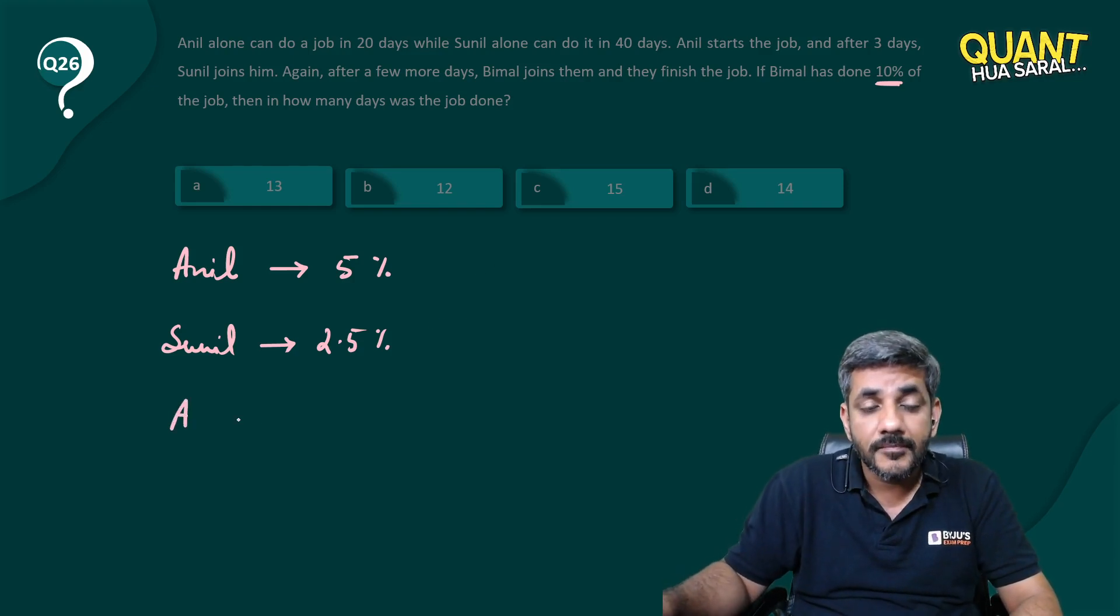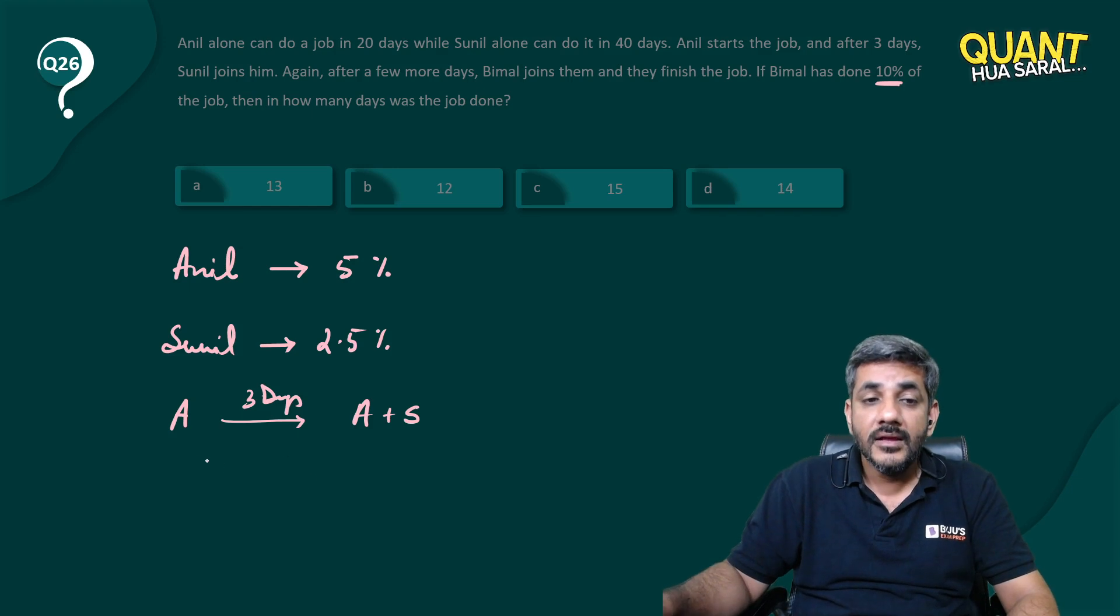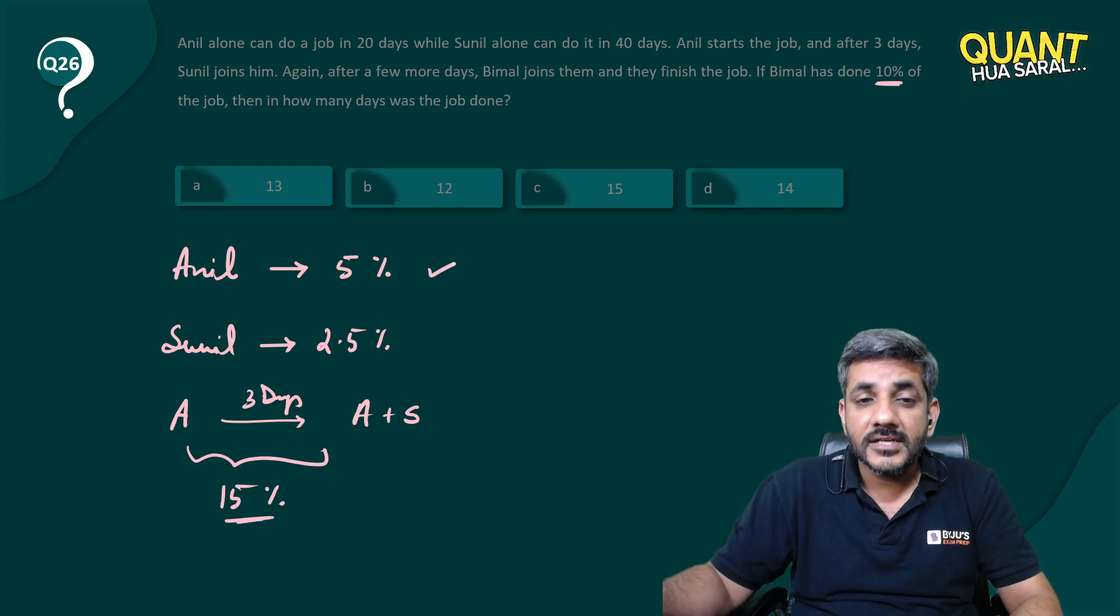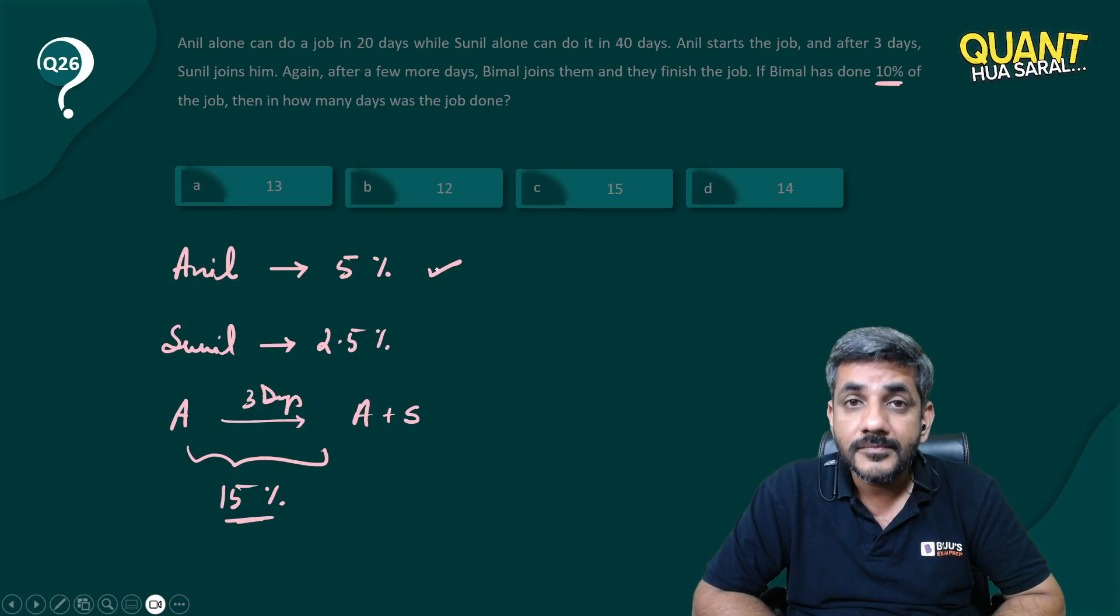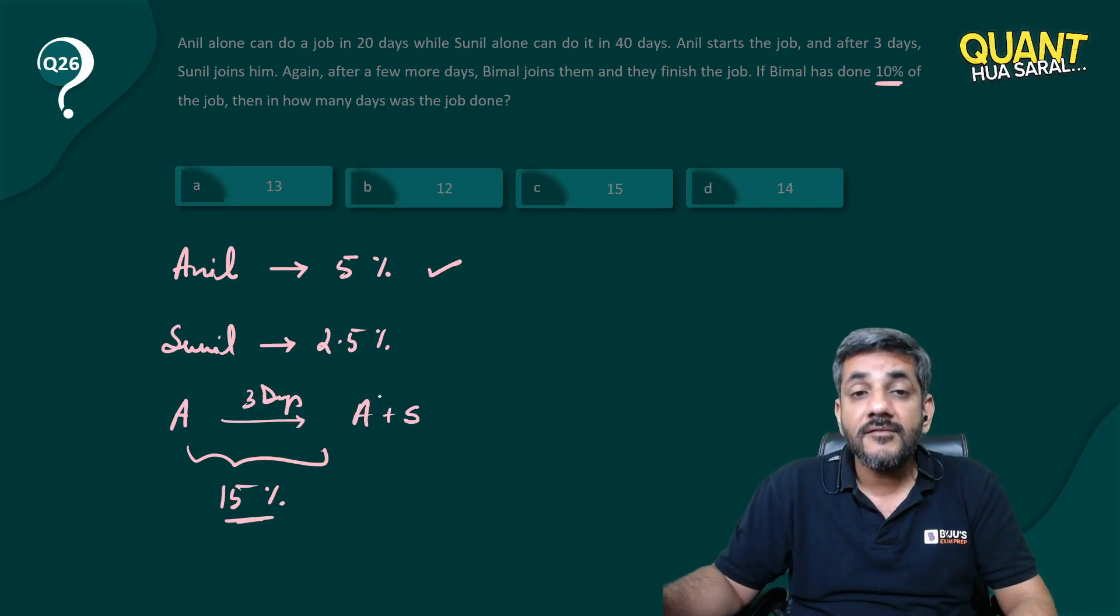So if Anil starts the job, he worked for 3 days and after that Sunil joins him. So now Anil and Sunil started working. Can I say that in these 3 days Anil must have completed 15% of the job? He does 5% of the job in a day, so he must have done 15% of the job.